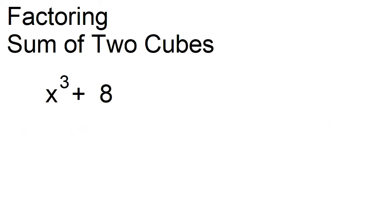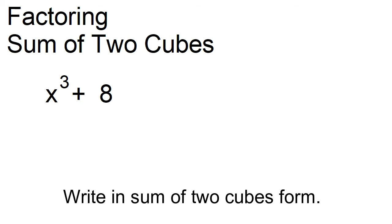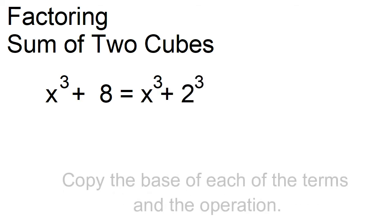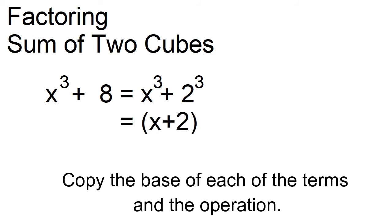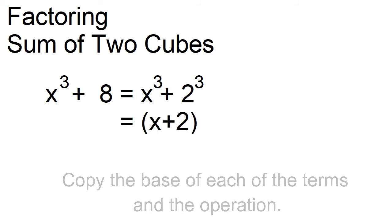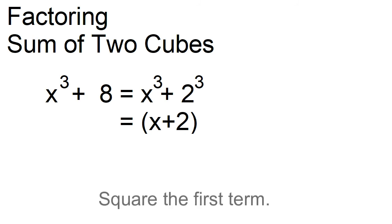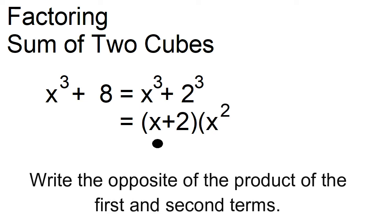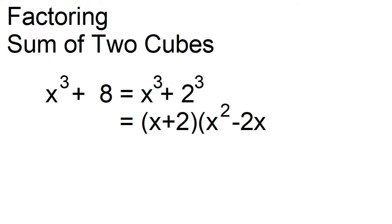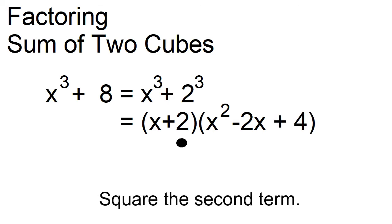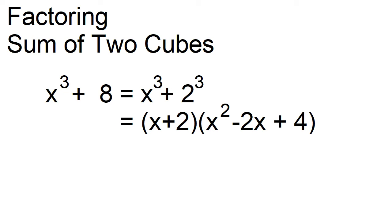Factor x cubed plus 8. First, rewrite in the form sum of two cubes: x cubed plus 2 cubed. Next, copy the base of each of the terms and the operation: x plus 2. Using this factor, square the first term: x times x is x squared. Next, multiply the first and the second terms: x times 2 is 2x. Write the opposite: minus 2x. Then square the second term: 2 times 2 is 4. The factors are x plus 2 and x squared minus 2x plus 4.